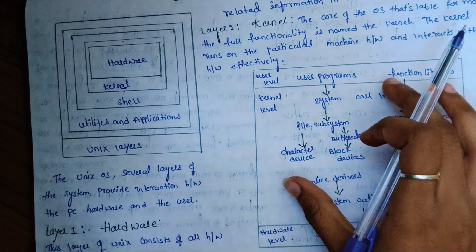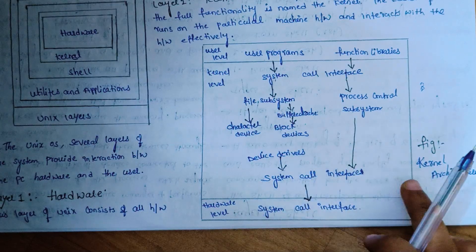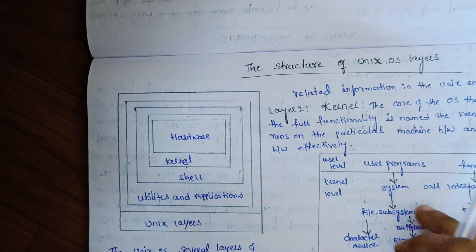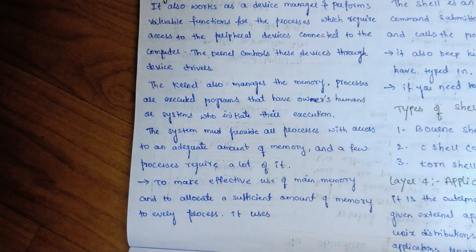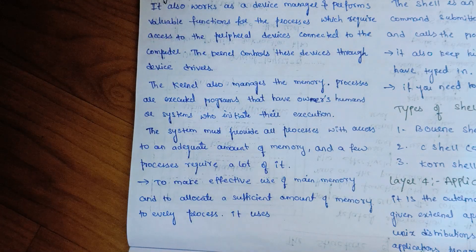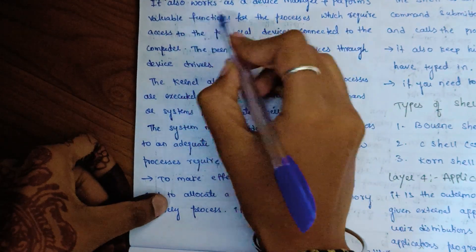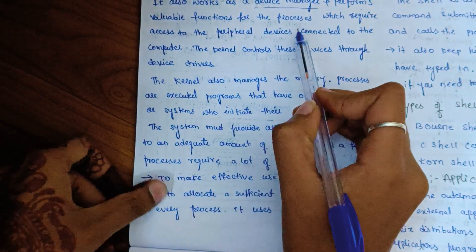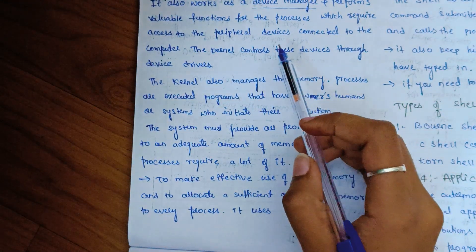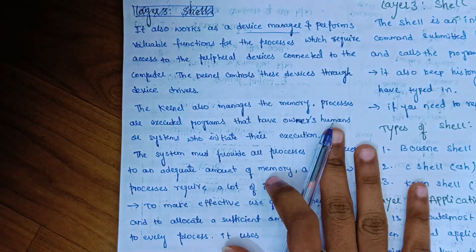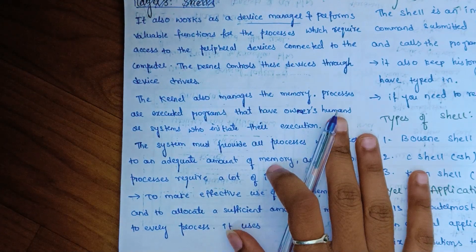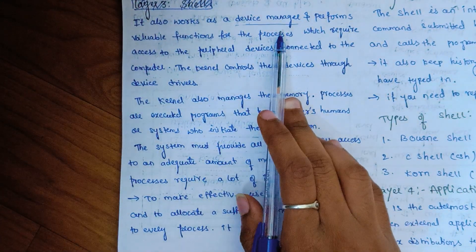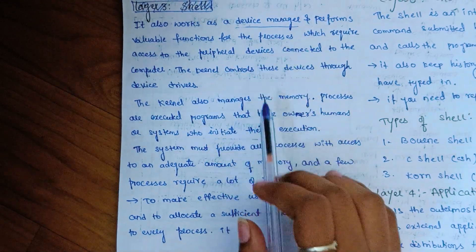We can use the kernel architecture, which performs many functions. The kernel also works as a device manager — it performs valuable functions for processes. When we connect a device to the computer, the kernel can control the device through device drivers.